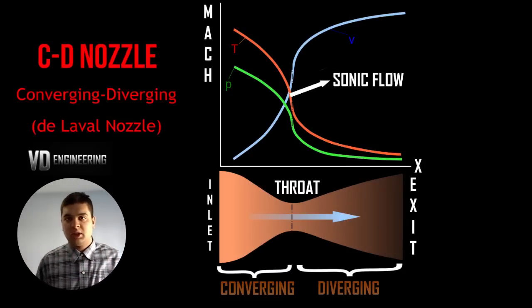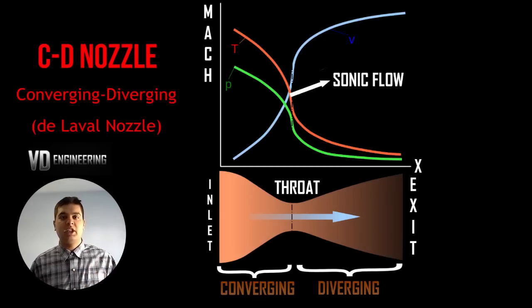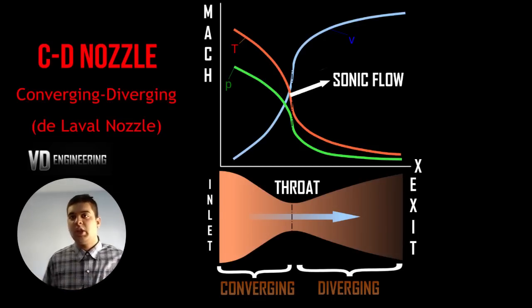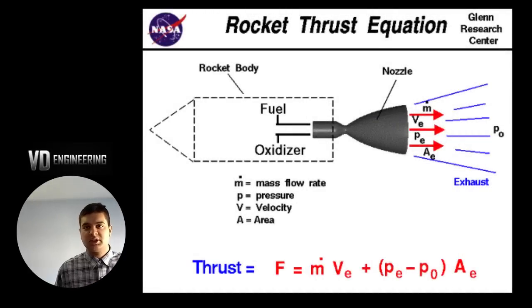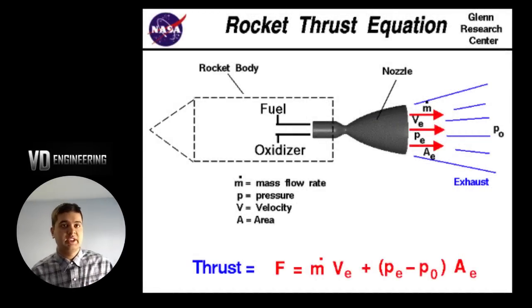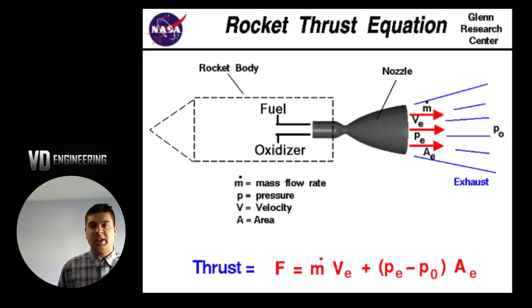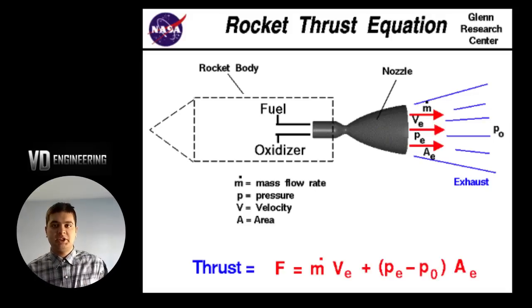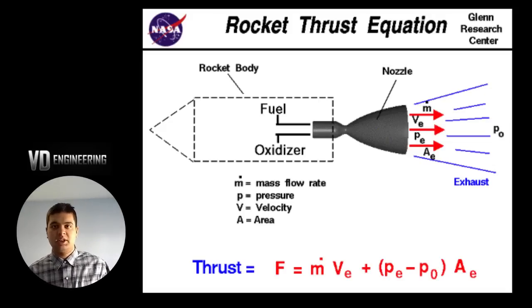When rocket companies like SpaceX design the nozzle, they first try to achieve sonic flow at the throat because that condition gives optimum expansion. The force produced by a supersonic nozzle equals the mass flow rate times the exit velocity, plus the difference in pressure between the exit and atmospheric pressure times the exit area. That is a very common and helpful relationship used whenever you design a nozzle to quickly calculate the force exerted.